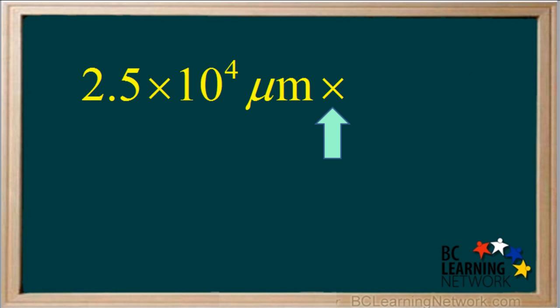Insert a multiplication sign before the conversion factor. Now draw a line. The unit we want to cancel is micrometers, so we write the unit micrometers on the bottom of the conversion factor.